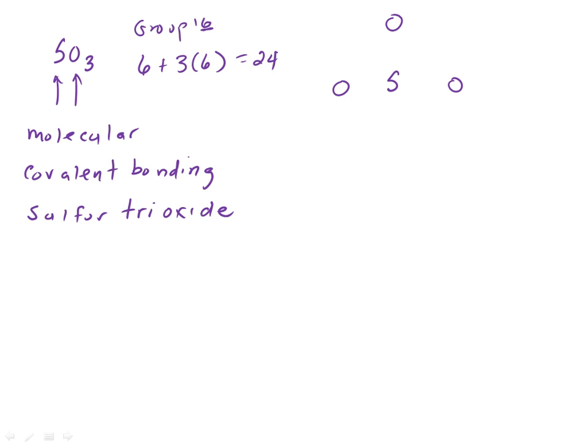Well, the least electronegative element is the central atom, almost always. And you go, what's electronegativity? Well, electronegativity increases as we go across, and it decreases as we go down the periodic table. And this is going to be an important concept to know. And fluorine is the most electronegative element on the periodic table.